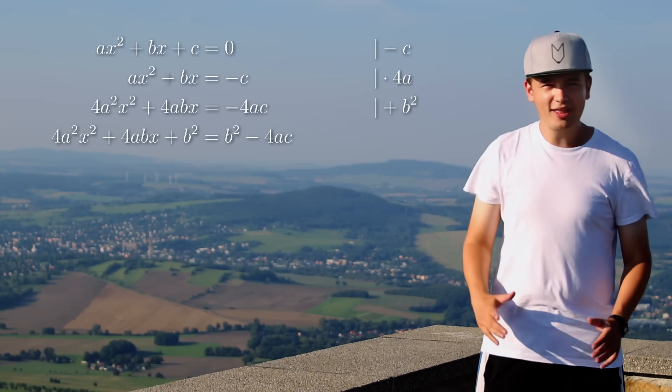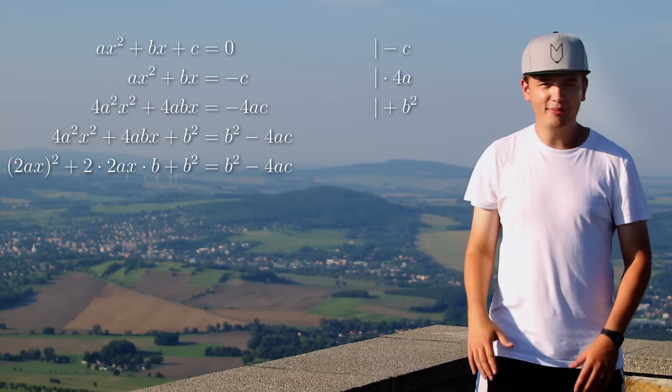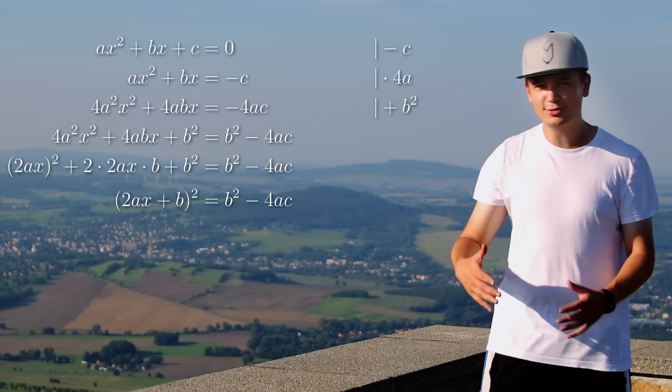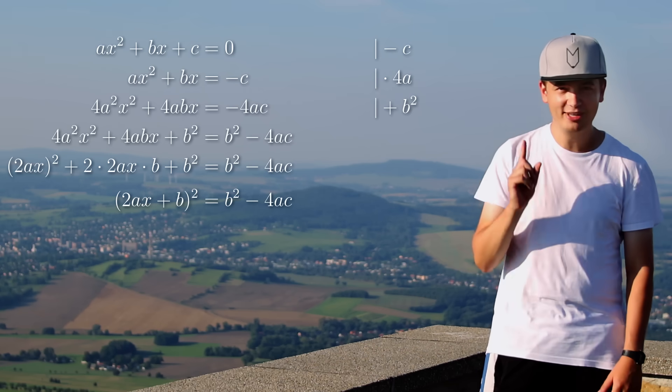But don't be scared. Just take a close look to the left side and you see, there's a binomial formula with 2ax and b. So all together this is the square of 2ax plus b and now we have only 1x.